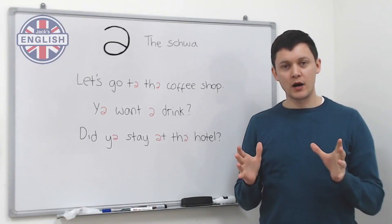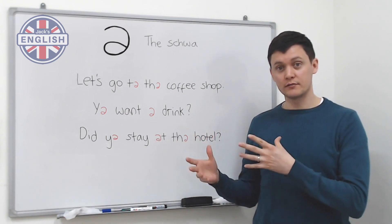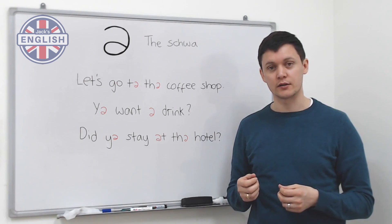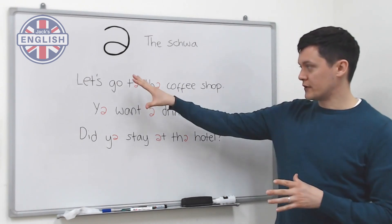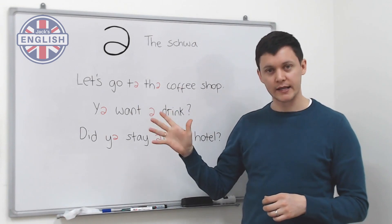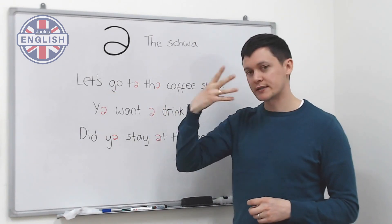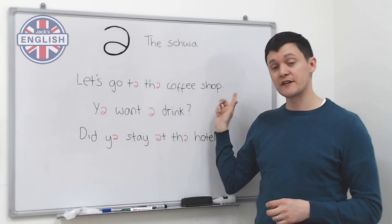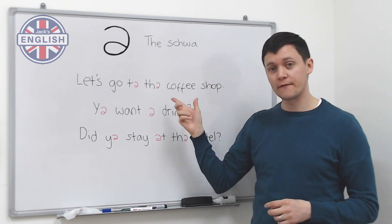In the final part of this video I want to look at some really common sentences and questions that we use in day-to-day conversation. I've already prepared these sentences with the schwa marked in them. Let's look at sentence number one: 'Let's go to the coffee shop.'